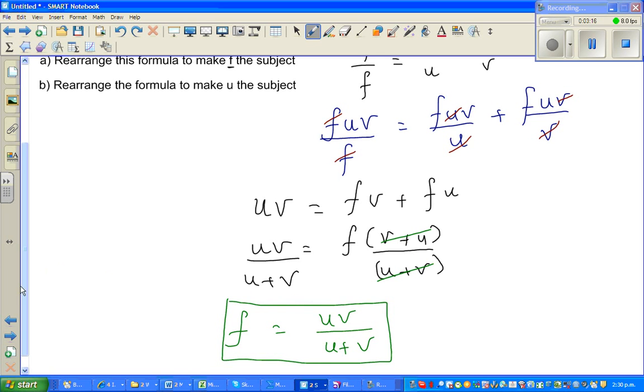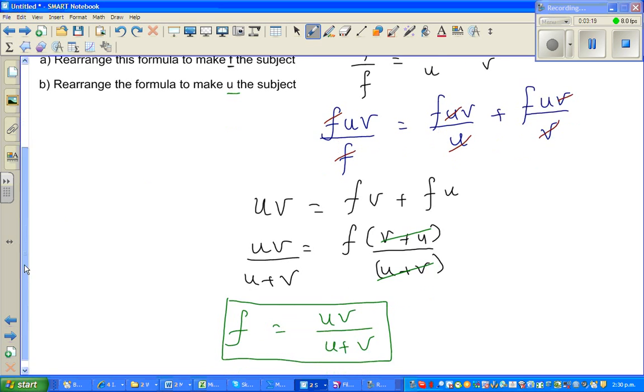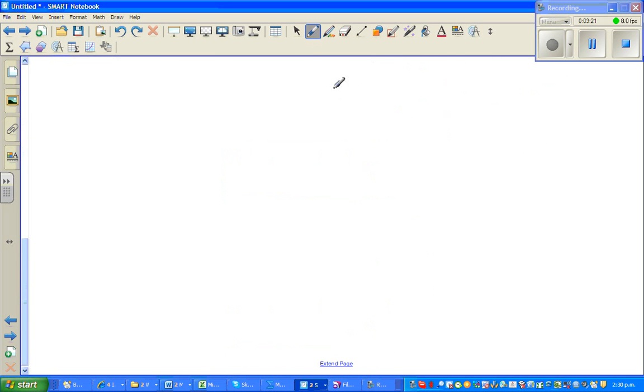Now the next is: you want to make u the subject. So let me rewrite this again. We know 1/u + 1/v = 1/f. Let me try the same approach - I'm going to multiply all terms with fuv: fuv/u + fuv/v = fuv/f.